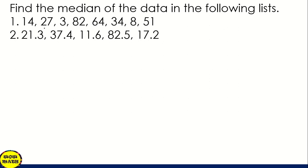For number 1: 14, 27, 3, 82, 64, 34, 8, and 51. So the concept for getting the median, when you have odd number of data, the middle value is the median. So if we count number 1, 1, 2, 3, 4, 5, 6, 7, 8.